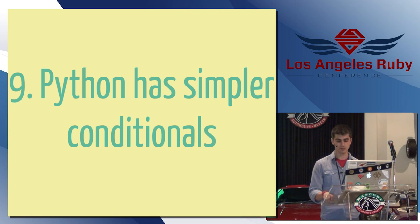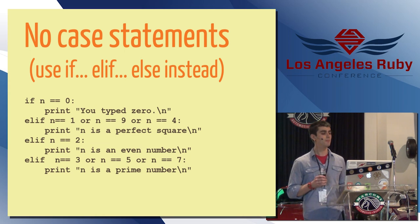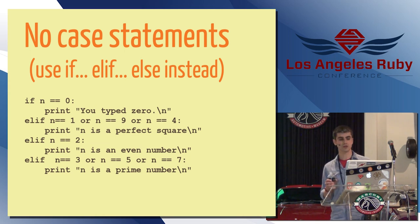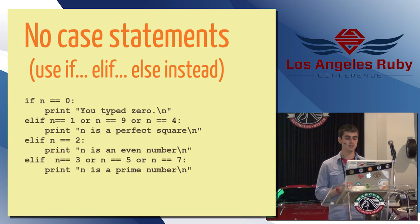Number nine, Python has simpler conditionals. There are no case statements. You just use an if, elif, else ladder. So instead of else if, in Python it's just elif, but basically you would use this kind of control structure instead of a case statement. In this particular code example, it just looks at the value of a number, and depending on what the value is, it will print out a different line. So you would just use that instead of, say, a case statement in Ruby.